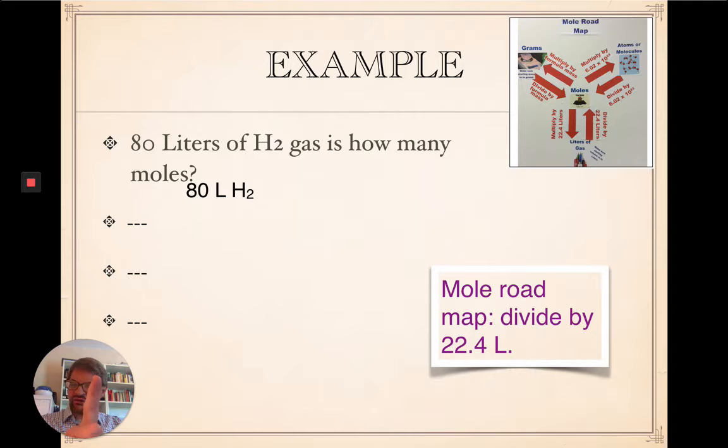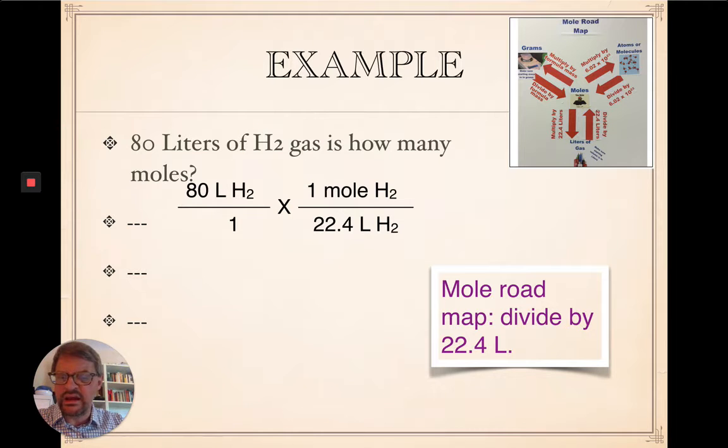Because one mole of gas, one mole of hydrogen, is 22.4 liters. So you set it up like that. And again, I did it factor and label style, so you can see how units cancel out. 80 divided by 22.4. Try that now. I'll give you a moment.